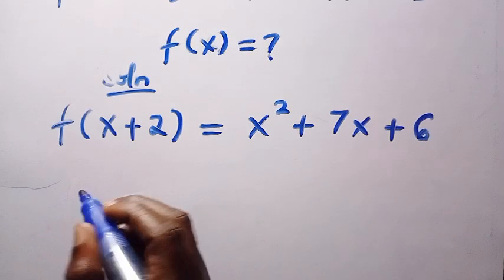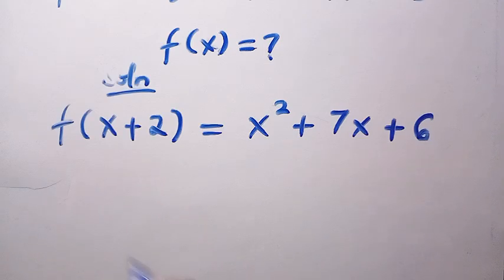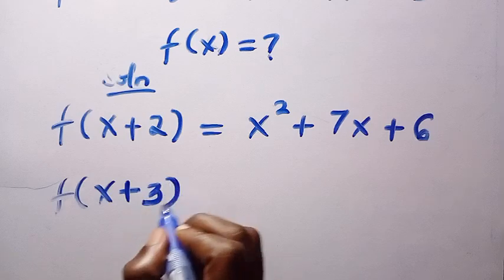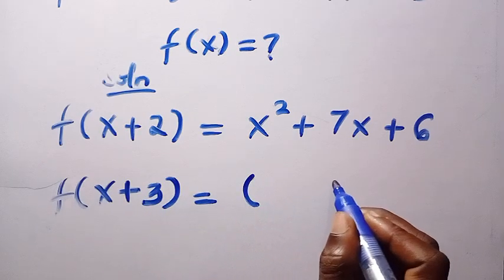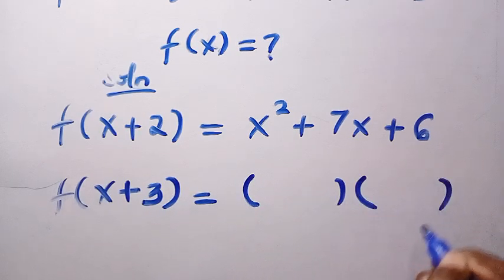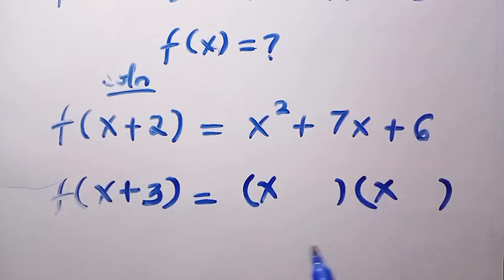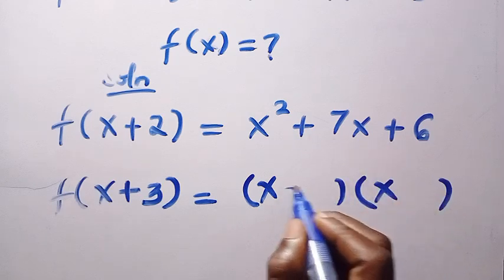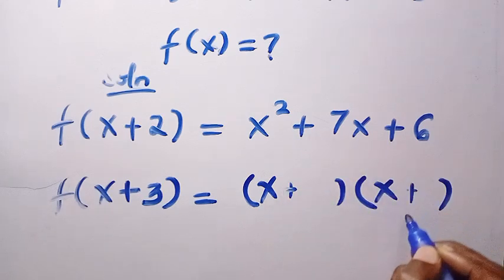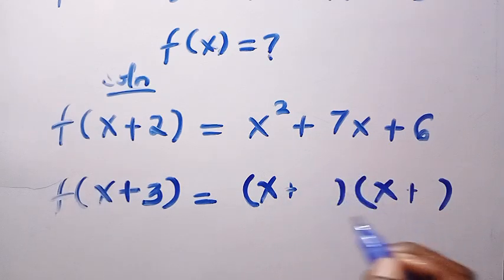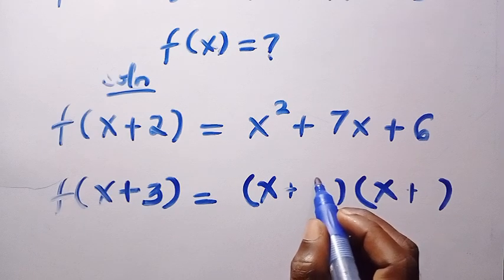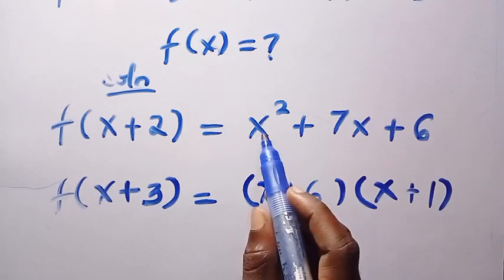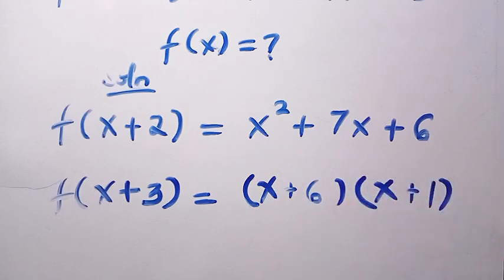So here we are going to have f of x plus 2. We are going to create 2 brackets. And here we have x, this is also x. This is plus, this is plus. Both of these take plus. And since we have 6 and 1, we have to distribute it as this is 6 and this is 1. If we expand this out, we are going to get x squared plus 7x plus 6.